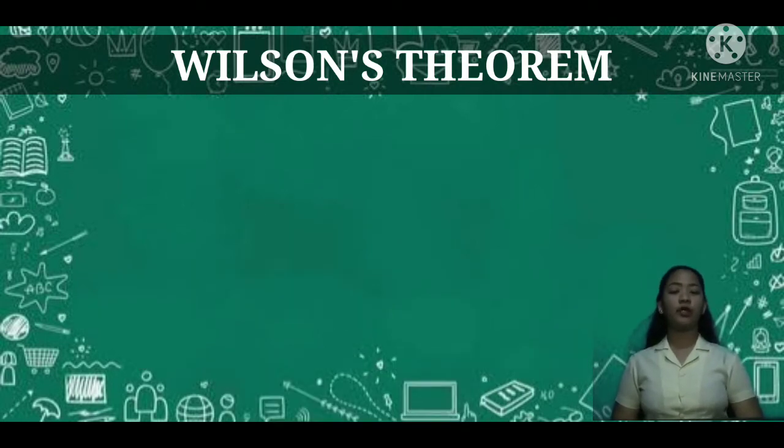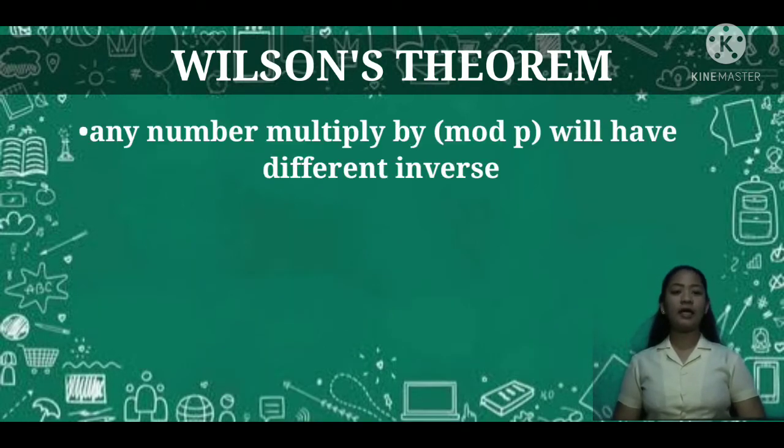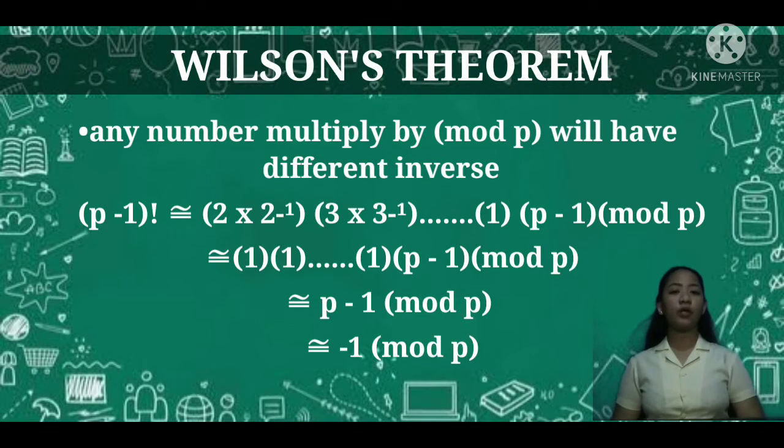But any other number (mod p) can be paired with their inverses. For example, (p-1)! ≅ 1 × (2 × 2⁻¹) × (3 × 3⁻¹) × ... each number multiplied by its inverse except 1 and (p-1) (mod p).